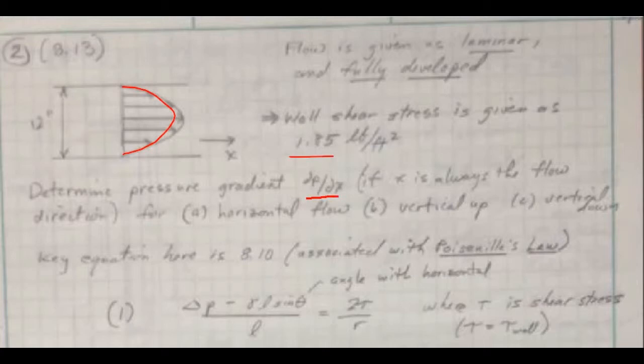So we want to know what the pressure gradient dp/dx is in three cases. They want to see the effect of gravity basically here. They want to do horizontal flow which is as it's drawn, but they also want to see vertical up and vertical down flow.